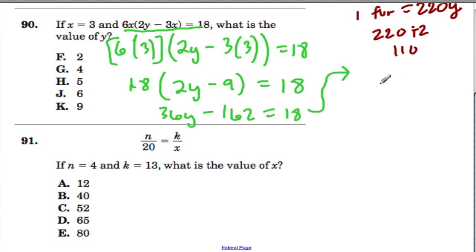So 36y minus 162 equals 18. I want to know what y is, so I'm going to add 162 to both sides. That gets rid of this, and 18 plus 162 is 180.